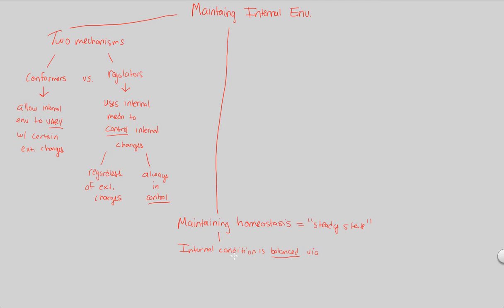Homeostasis cannot just happen haphazardly — it has to occur via specific routes. Examples include temperature changes, blood glucose changes after eating, and solute level changes when you're thirsty. These are all maintained by homeostatic mechanisms. The internal condition responds to these external changes through temperature, blood glucose, or solute level adjustments.